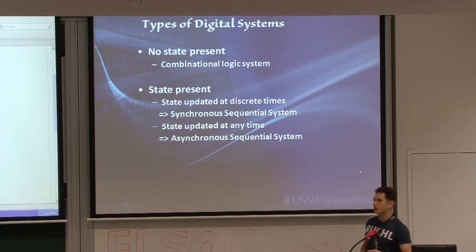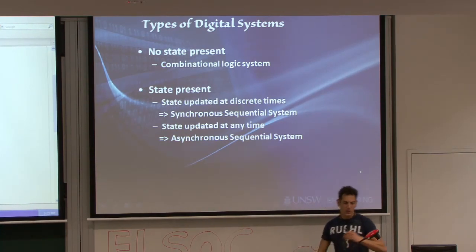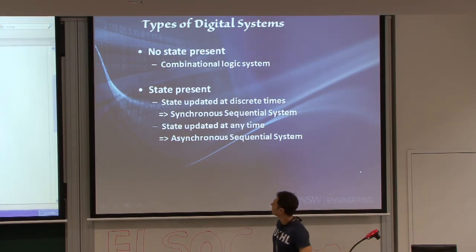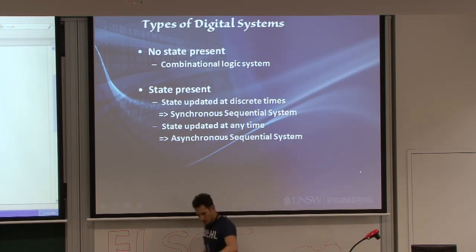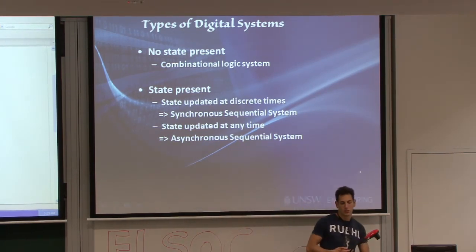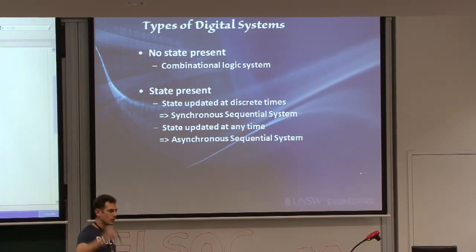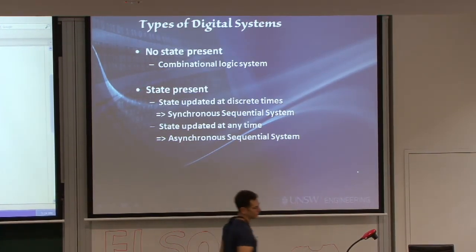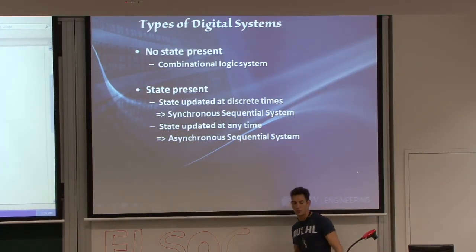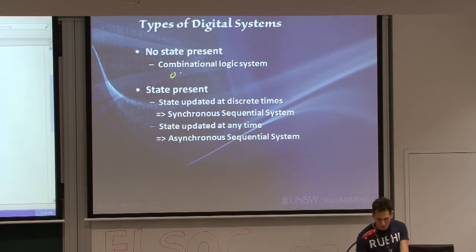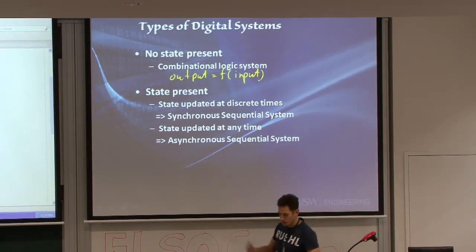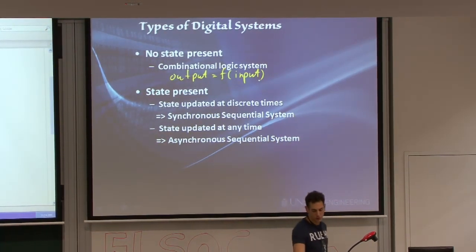What are the two major types of digital systems? We have memory-less systems, so no state is present. When there's no state, we talk about combinational logic systems, where whatever inputs you put in right now, that's what's coming out — regardless of whatever you put in before. We can formally say that the output is some function of the current input and nothing else. You change the input, you get the corresponding output.